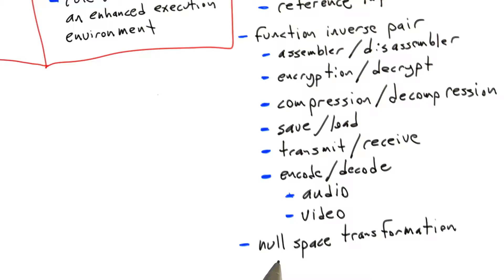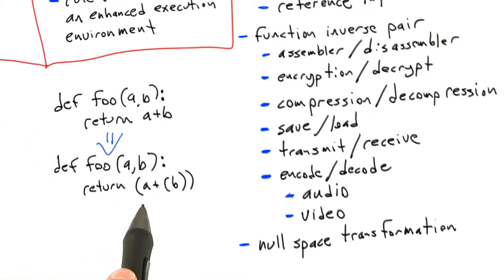So one thing we could do, just as a trivial example, is we could start with a simple Python function. This is the input to the null space transformation. So here we have foo of a and b returns the sum of a and b.